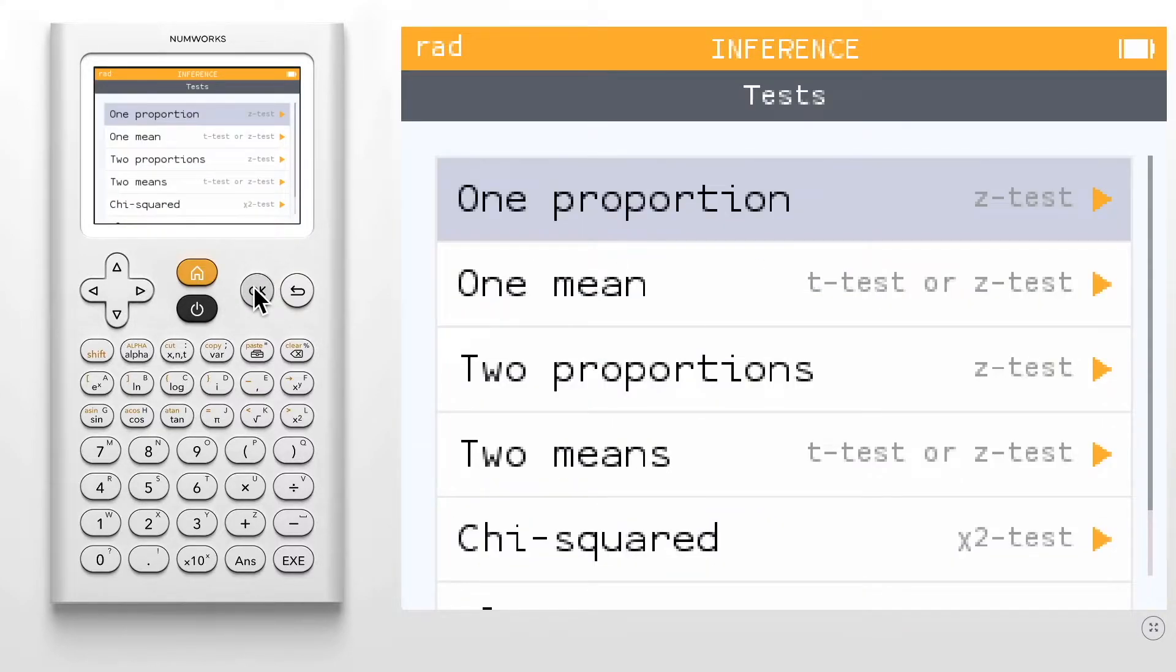For this example, we will perform a one-sample z-test for a proportion. Select one proportion.